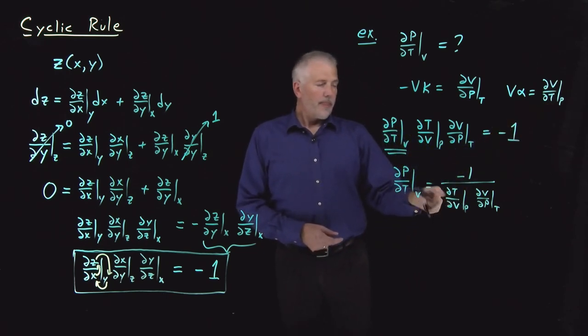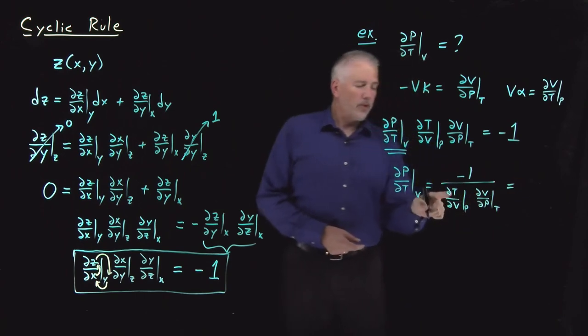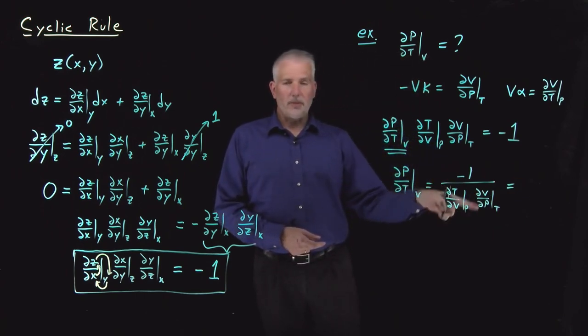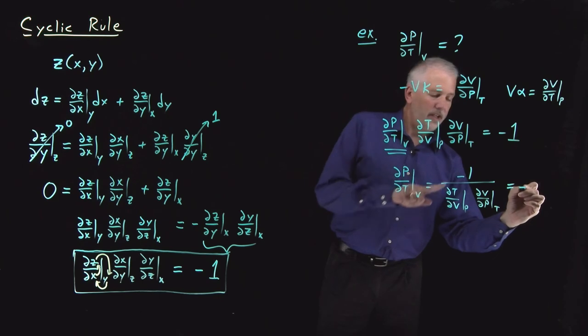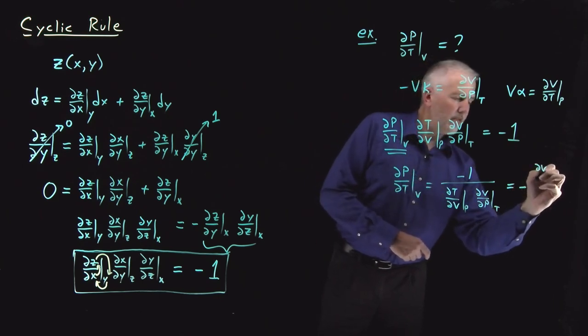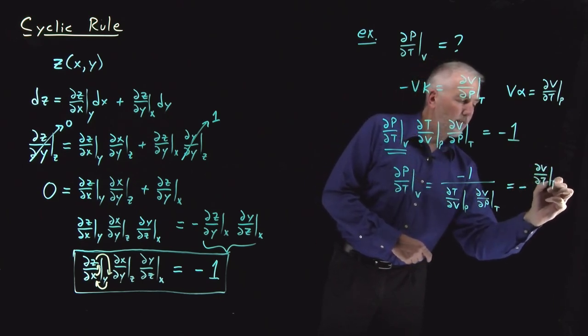So I could rewrite this fraction. If I move the ∂T/∂V at constant p up to the numerator, using the reciprocal rule, I'll have negative ∂V/∂T at constant p in the numerator,